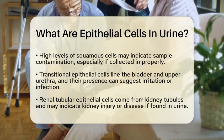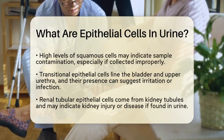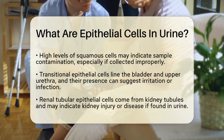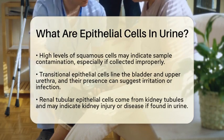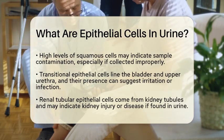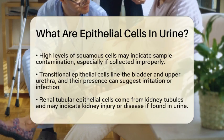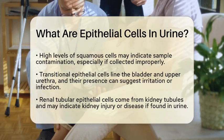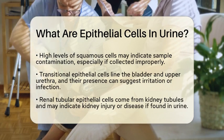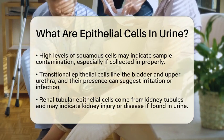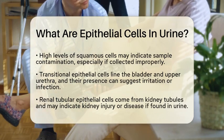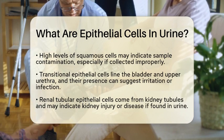Next, we have transitional epithelial cells. These cells line the bladder and the upper part of the urethra, and are sometimes referred to as urothelial cells. Finding these in urine can indicate irritation or infection in the bladder or upper urinary tract. It's important to pay attention to these cells during urinalysis.